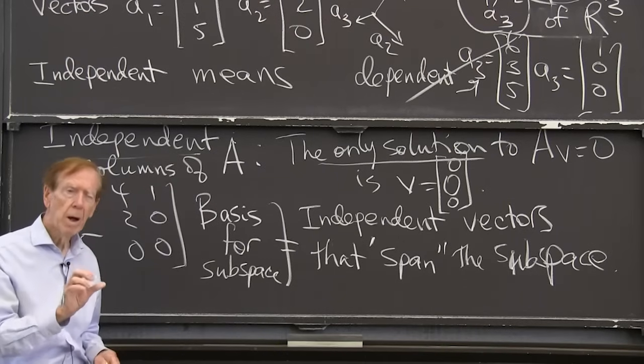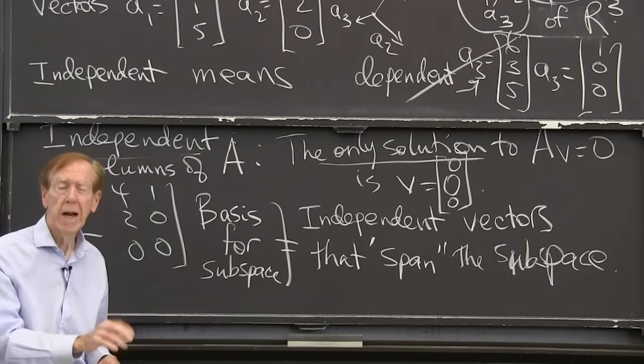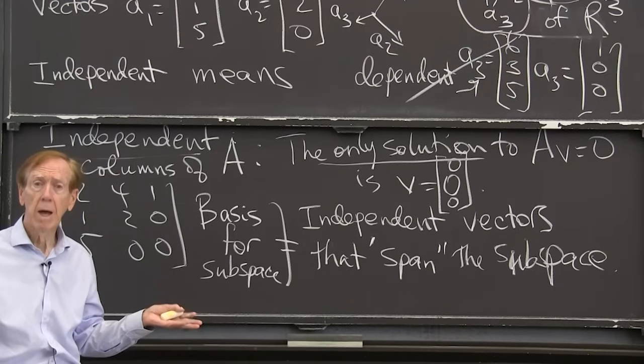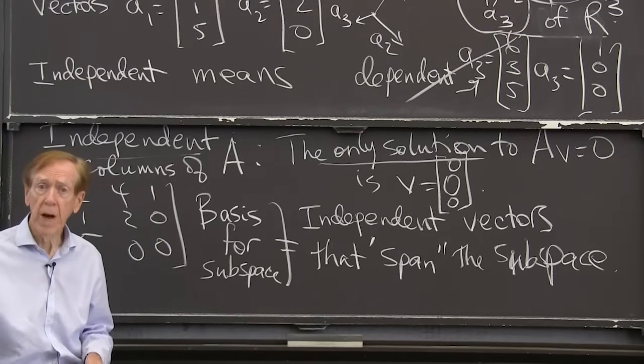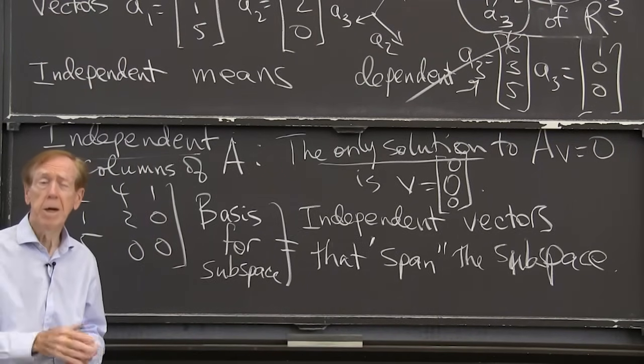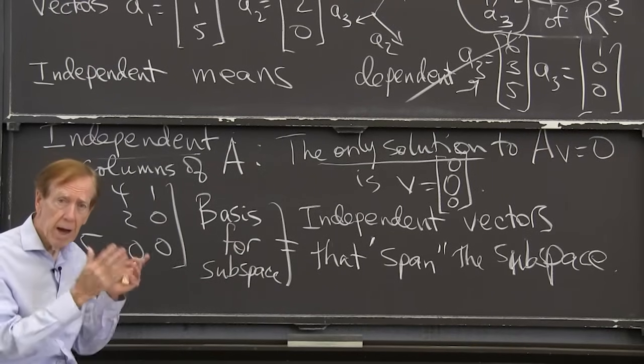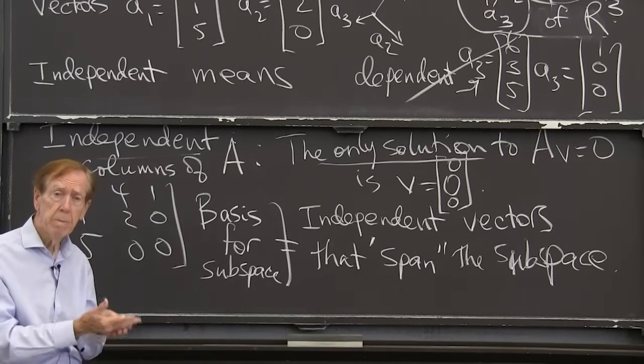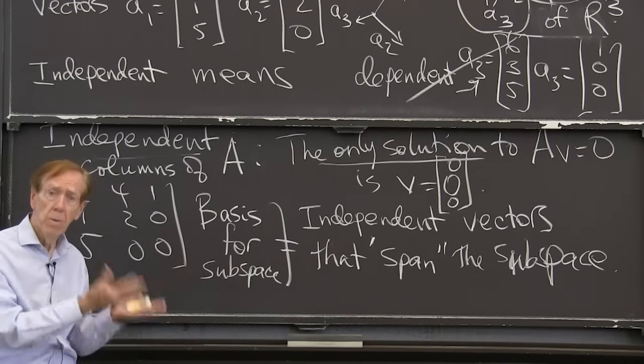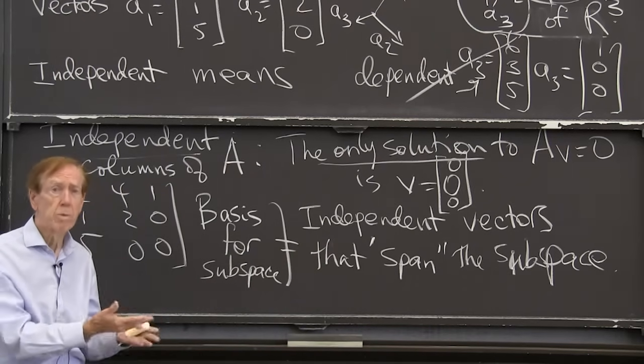I can never get two vectors that span all of R3. And I can never get four vectors that are independent in R3. If I have fewer than the dimension number, I don't have enough. They don't span.